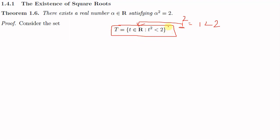We can clearly see that set T is bounded above because 2 is an upper bound for this set. By the axiom of completeness, since T is non-empty and bounded above, T has a supremum, and we call that supremum alpha. So let alpha equal the supremum of T.